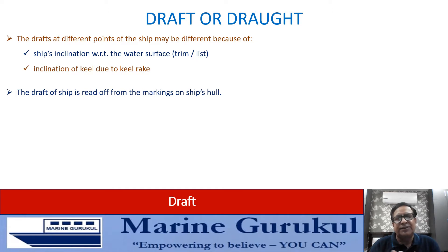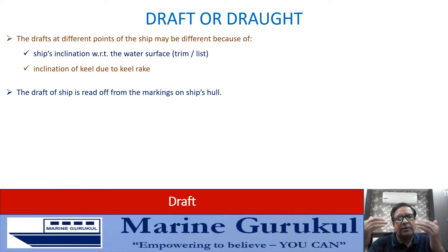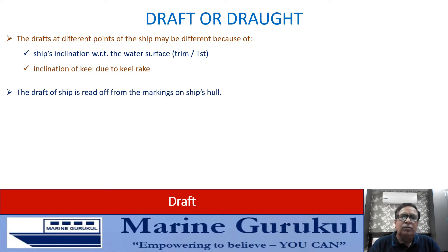How do we get to know the draft? The draft of the ship is read off from the draft markings which are on the outer side of the hull. From outside the ship, on the outer side, we have the markings of the ship's hull, and from those markings the draft can be read off.